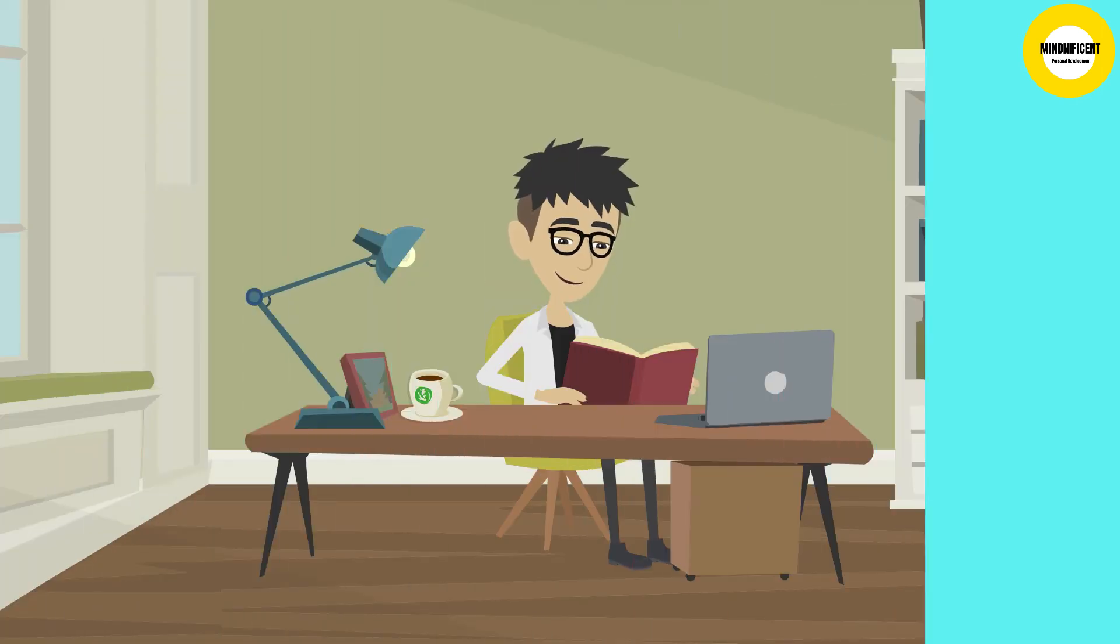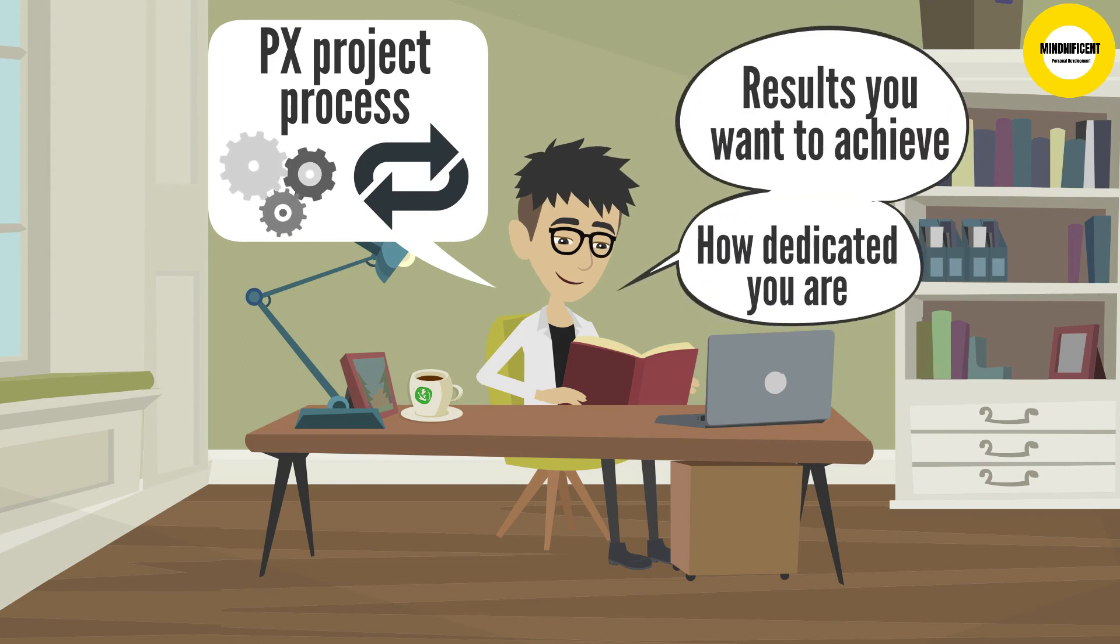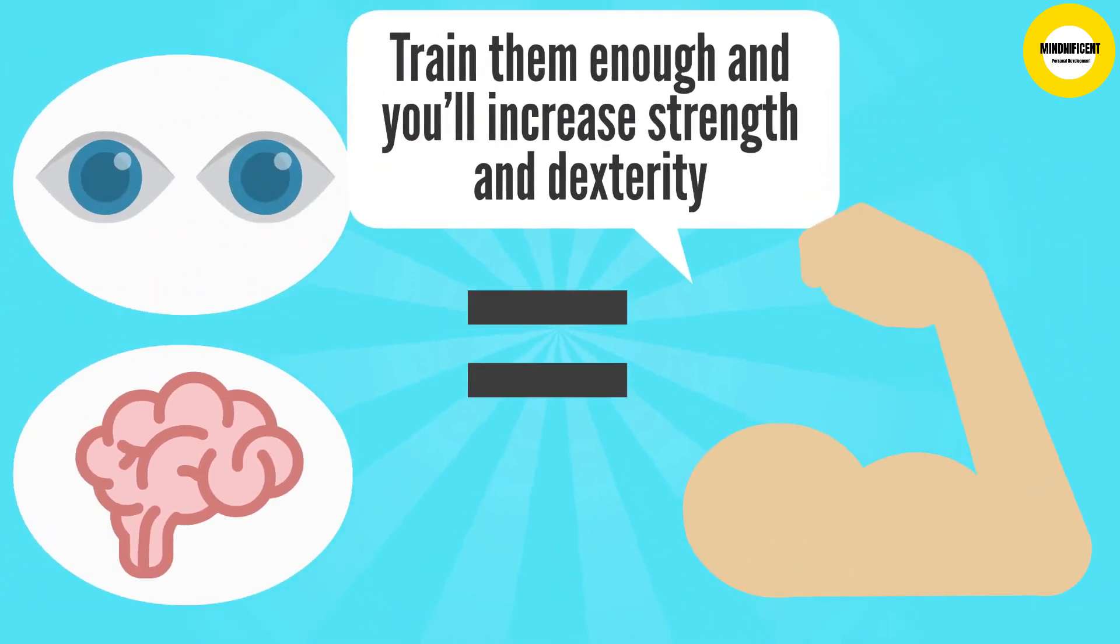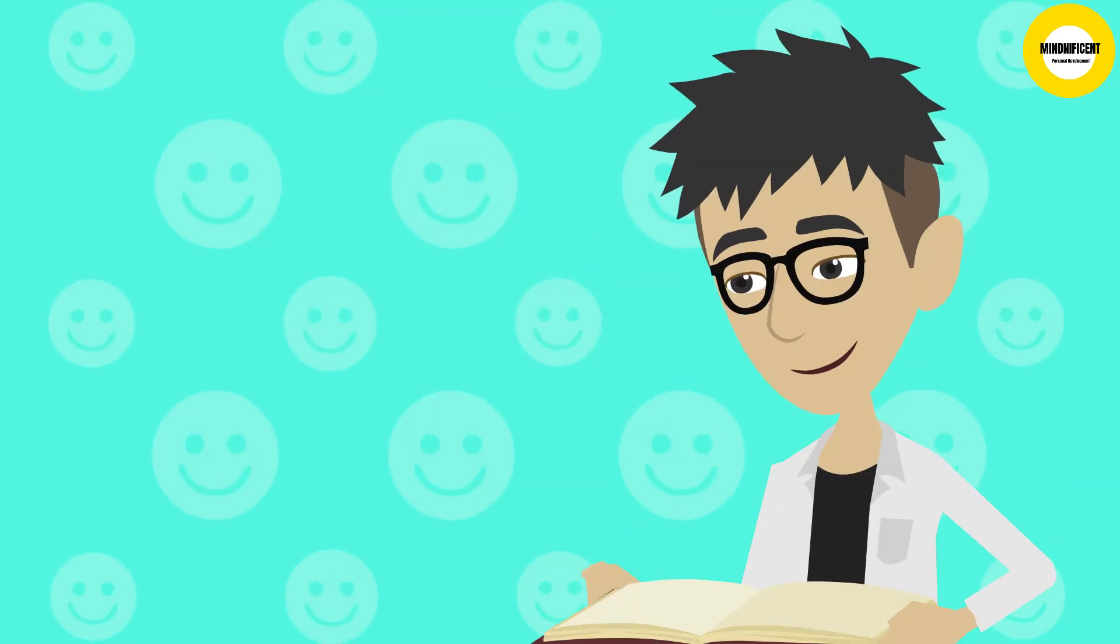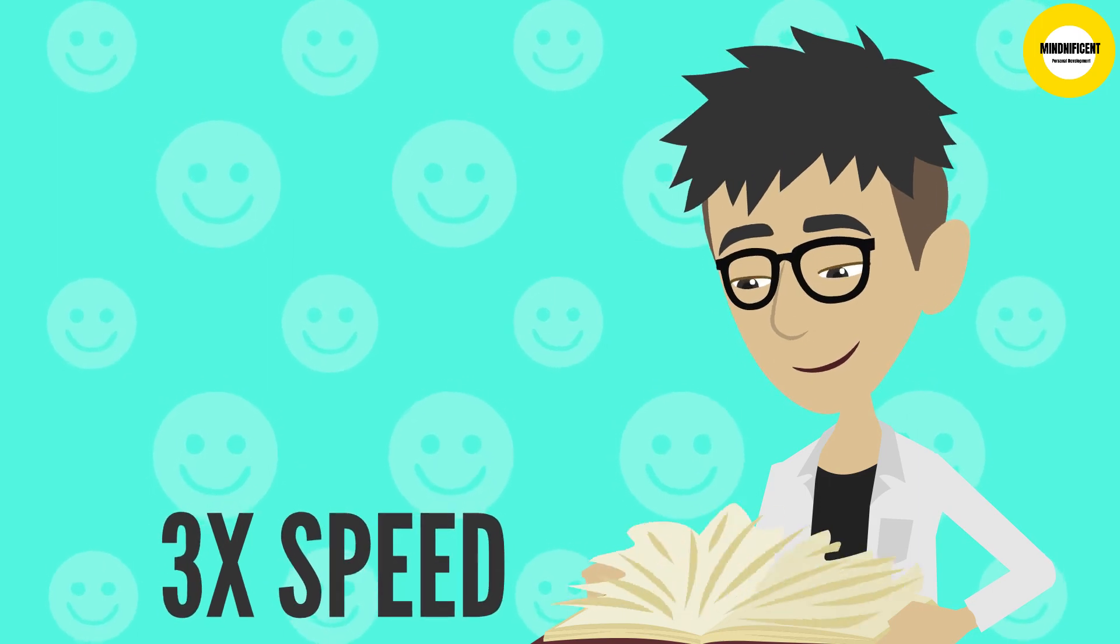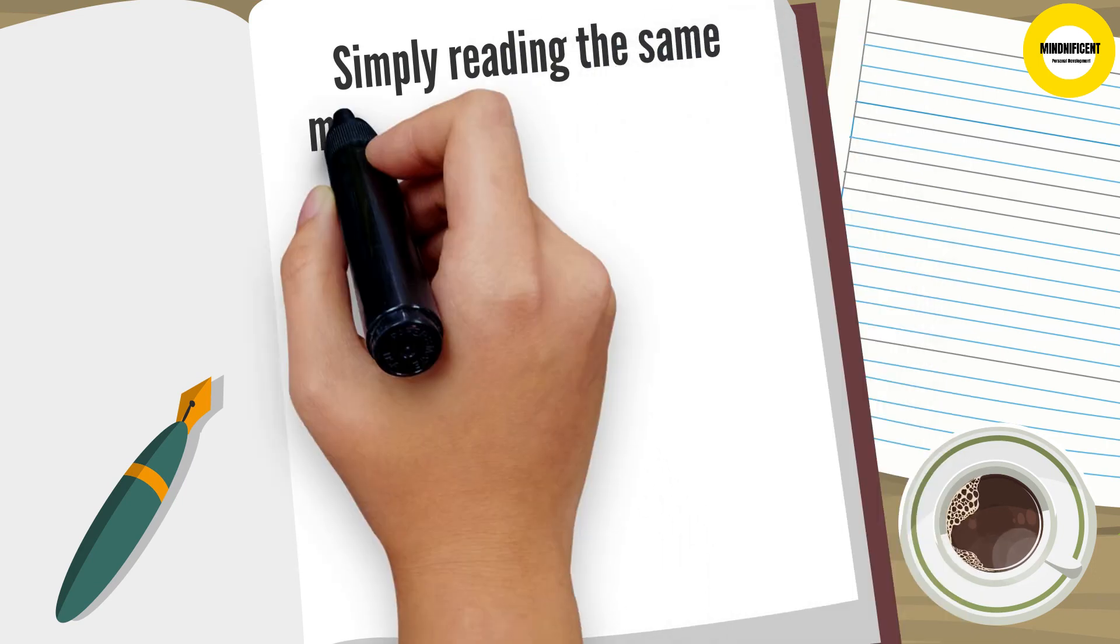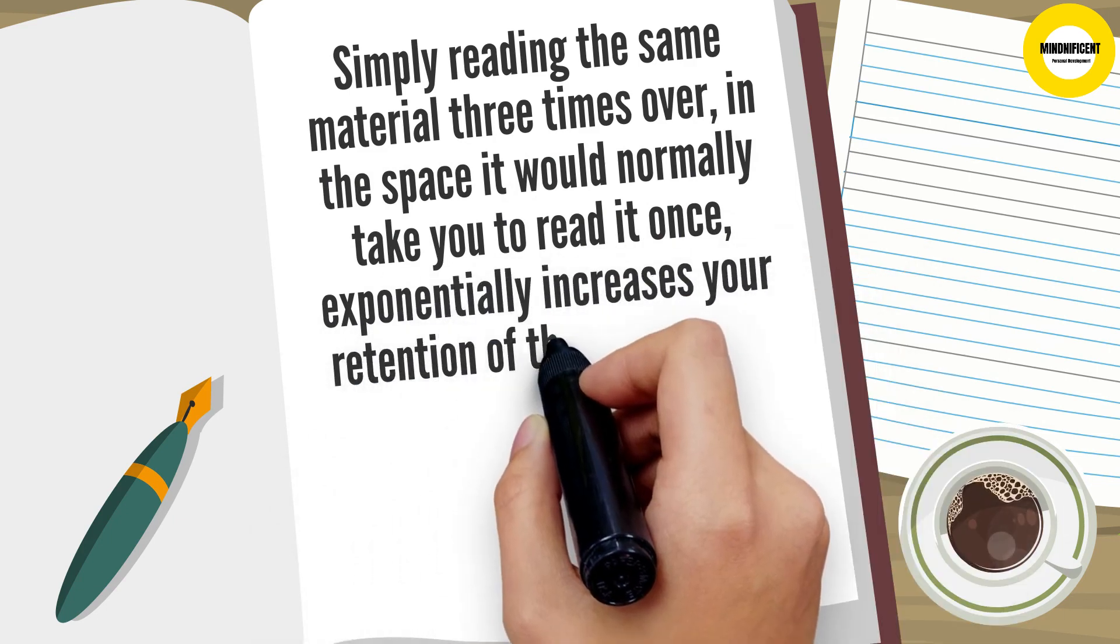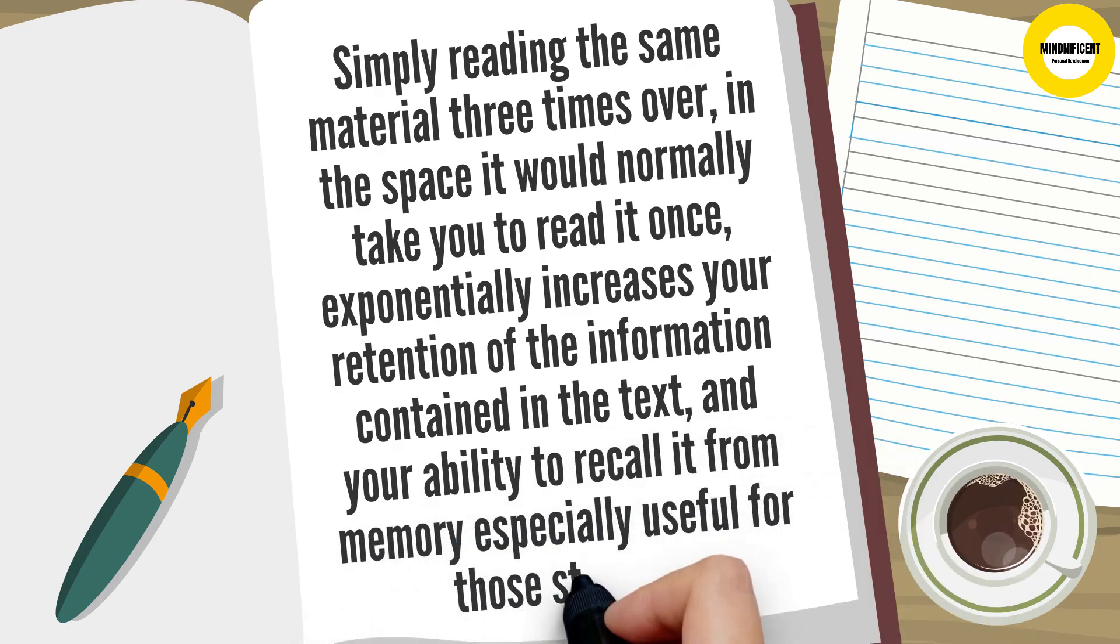Homework. You can repeat the PX project process as often as you like, depending on how dedicated you are and the results you want to achieve. Your eyes and brain are like a muscle. Train them enough, and you'll increase strength and dexterity. Catch that ball. With enough practice, you'll find that you can easily triple your reading speed. Congratulations! You're now a speed reader. The silver lining is that comprehending at this increased speed has another benefit. Simply reading the same material three times over in the space it would normally take you to read it once, exponentially increase your retention of the information contained in the text, and your ability to recall it from memory, especially useful for those studying.